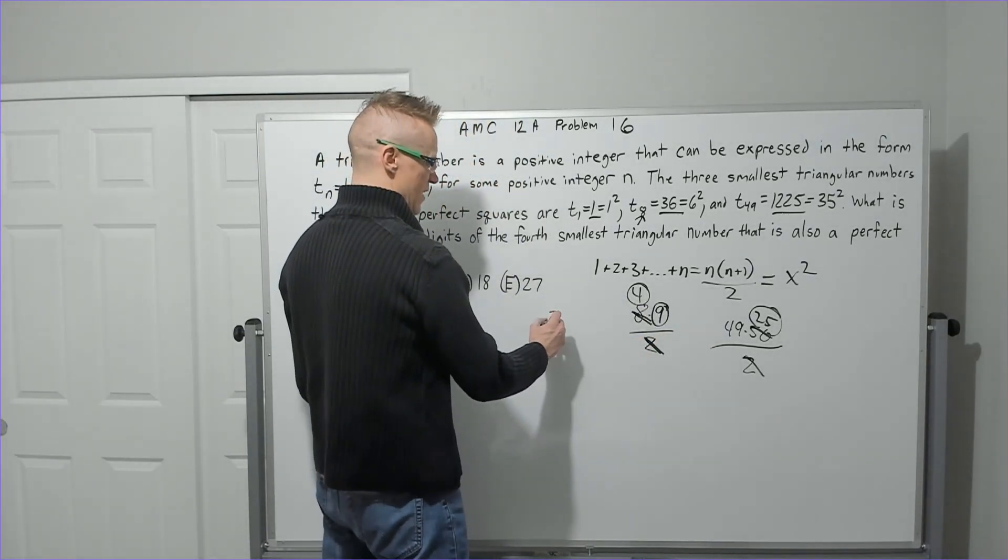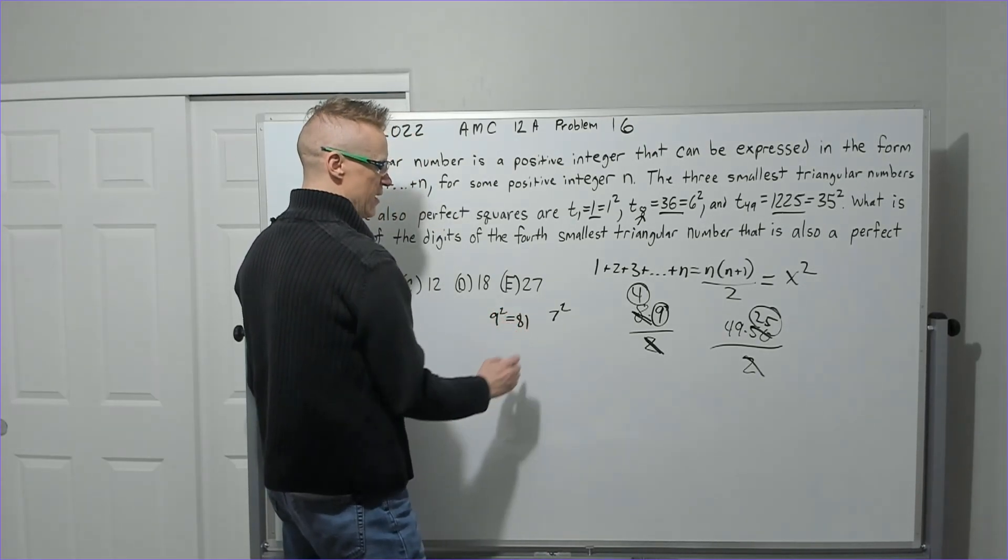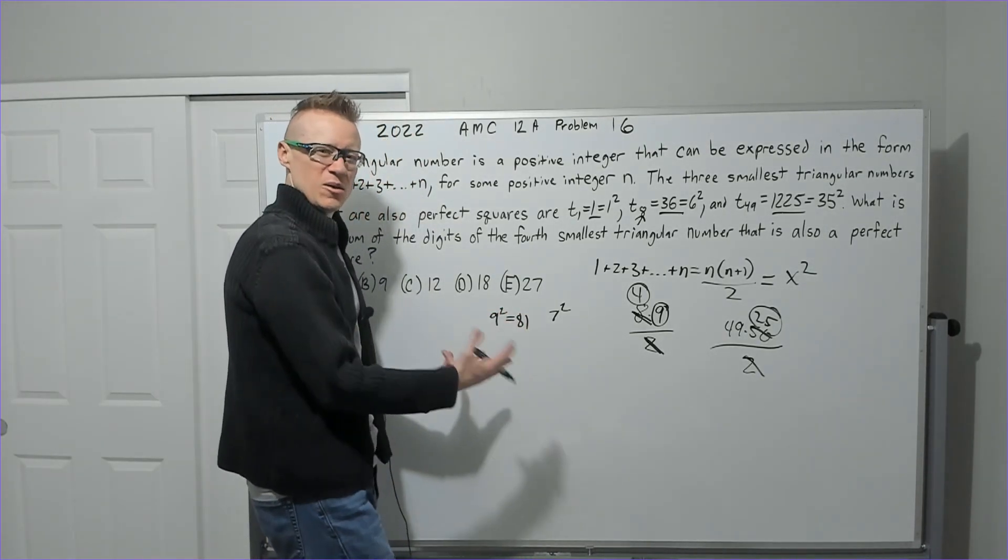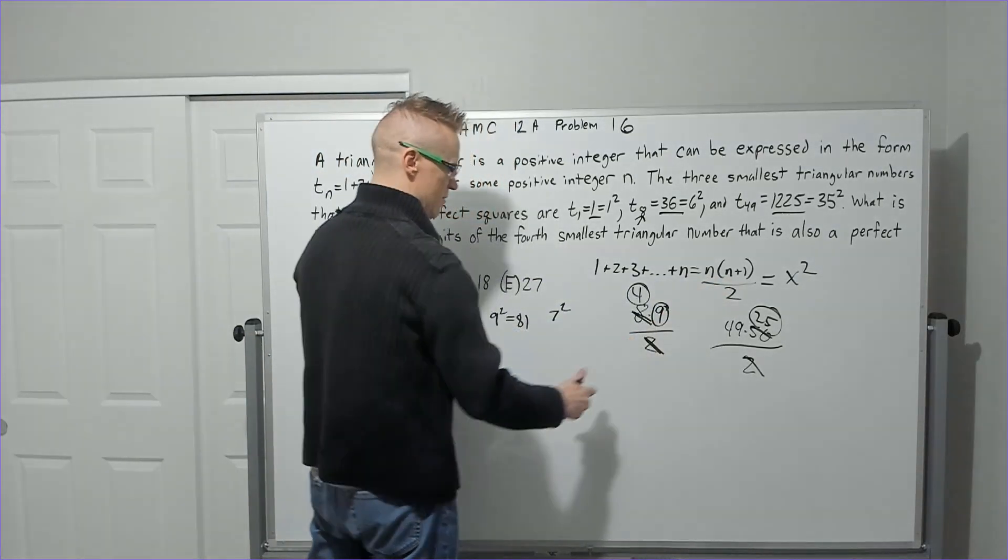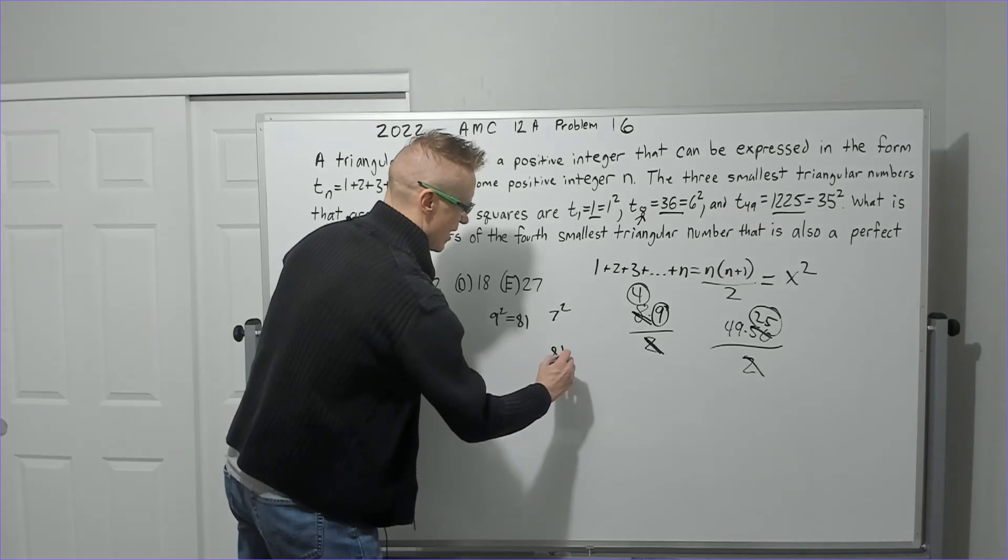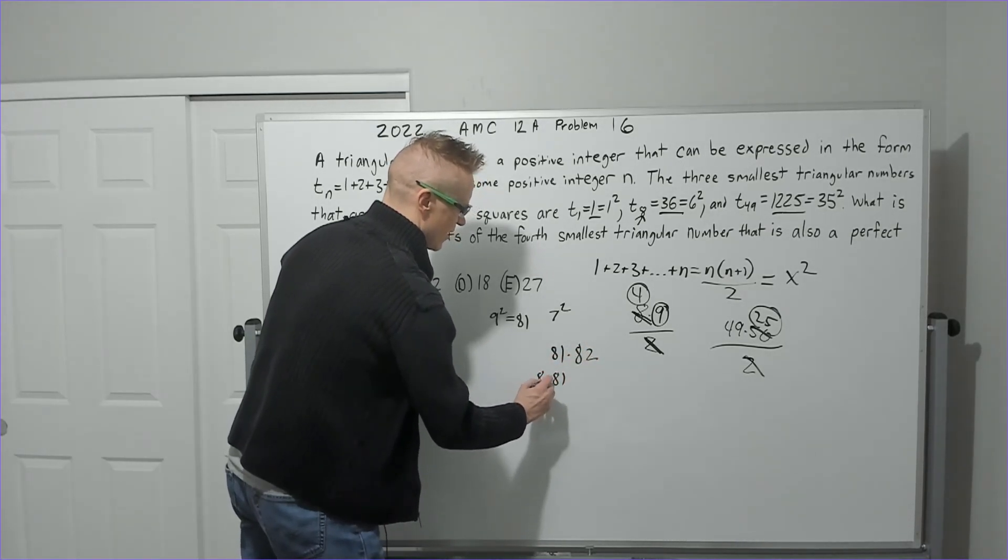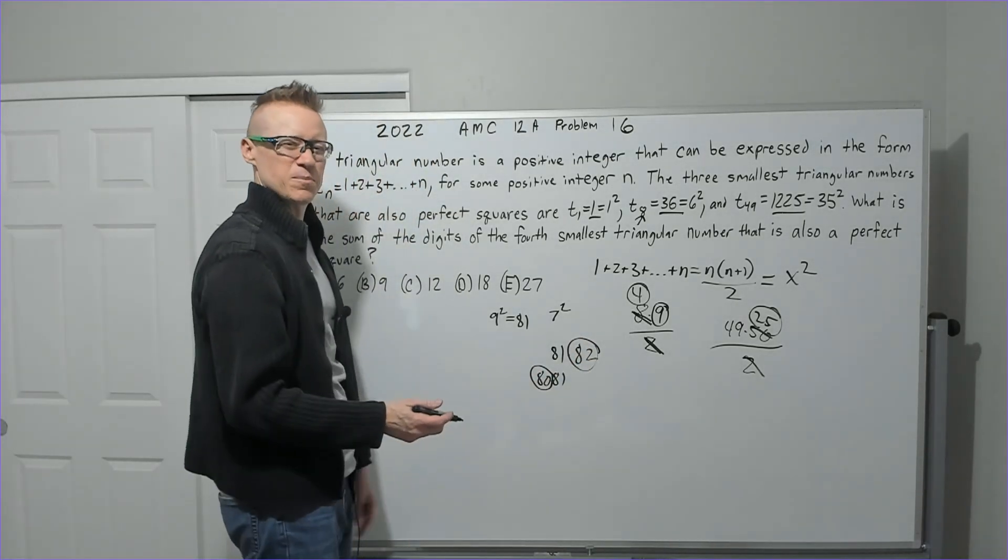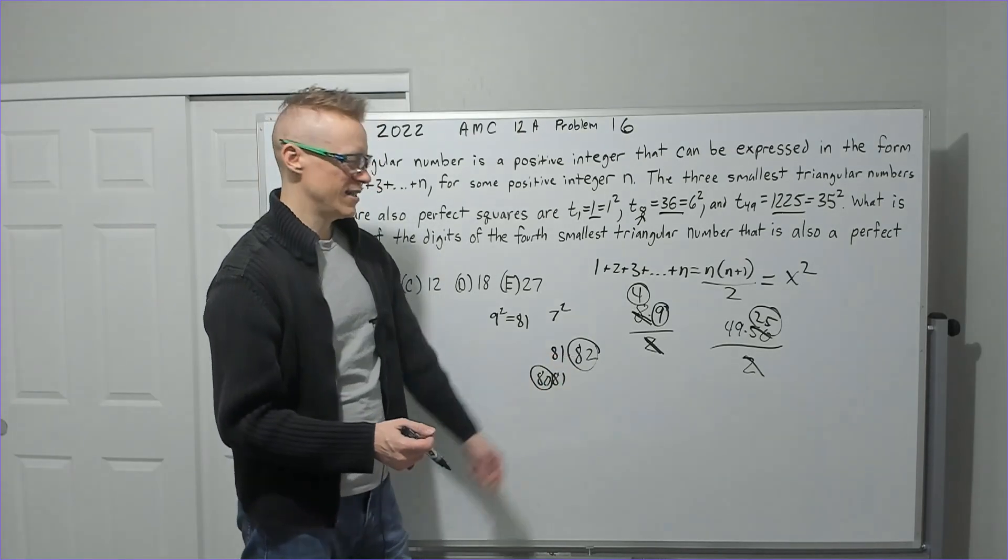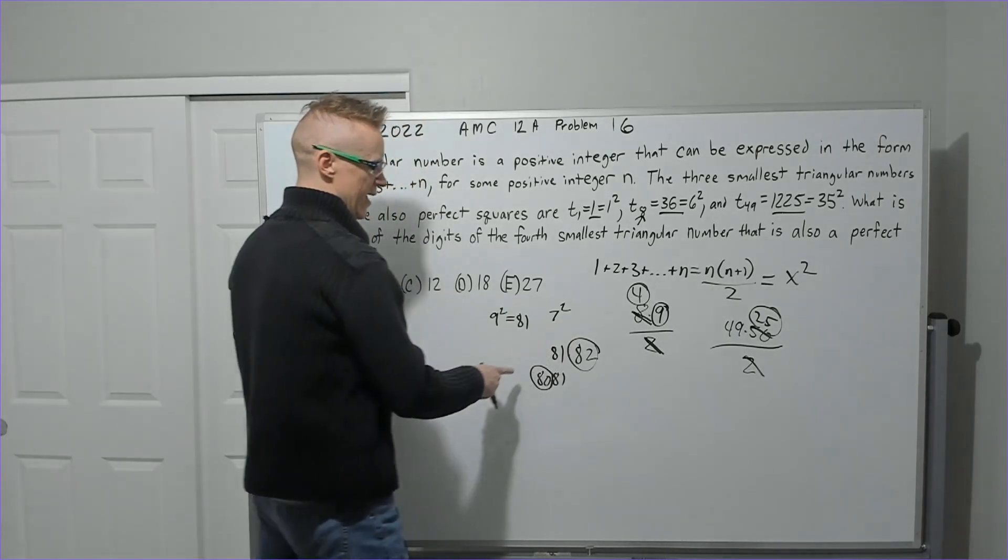So let's go to 9 squared is 81. In order to use 81 with triangular numbers, it's either going to be the n or the n+1, so I'll either have 81 times 82 or 81 times 80. And you're looking for an even number that when I cut it in half I get a perfect square. But 40 and 41 don't have that property.